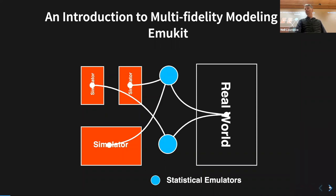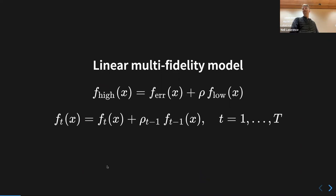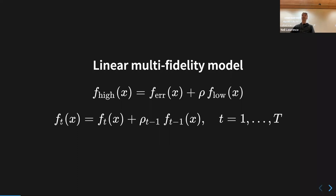That's a sort of linear representation. And of course we can scale that — we can talk about different levels of fidelity that I've labeled T here, which makes it look like time, but here T is different levels of fidelity. As T goes large we've got the highest level of fidelity, and we keep saying the higher levels of fidelity are related to the lower level of fidelity plus some error associated with them.